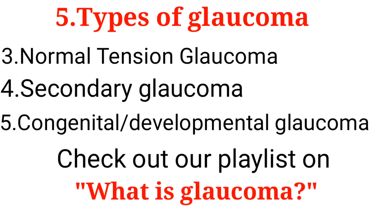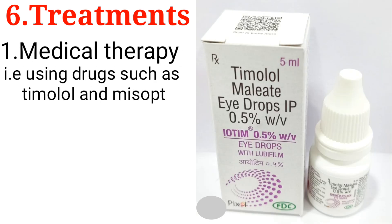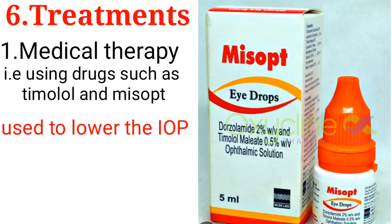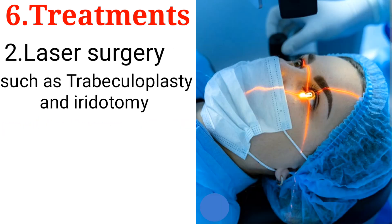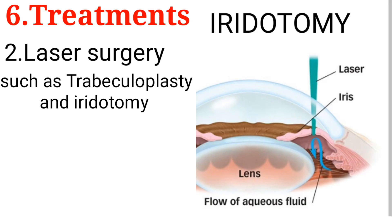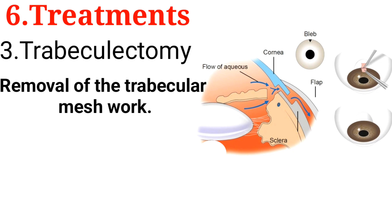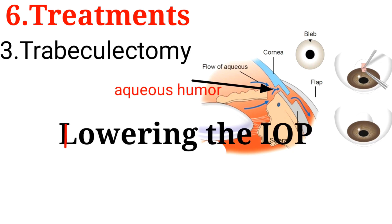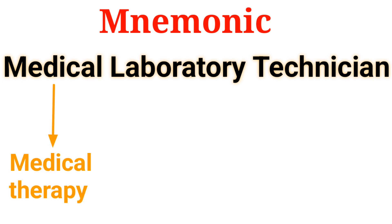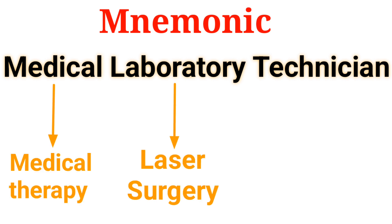Treatments for glaucoma can be achieved through medical therapy using drugs such as timolol soft eye drops to lower the IOP, laser surgery such as trabeculoplasty and iridotomy, and finally trabeculectomy, which is the removal of the trabecular meshwork, making a new opening for drainage of aqueous humor and thus lowering the IOP. A helpful mnemonic for the treatment is 'MLT': M stands for medical therapy, L stands for laser surgery, and T stands for trabeculectomy.